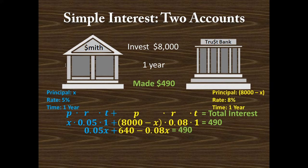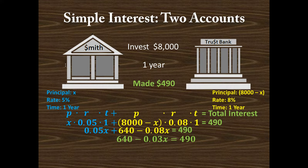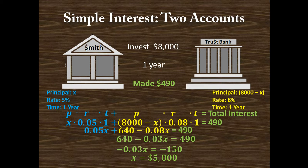Keeping our total interest of $490, we combine like terms. We have 0.05X minus 0.08X, which gives negative 0.03X. So the equation becomes: 640 − 0.03X = 490. To isolate the variable, we subtract 640 from both sides: 490 − 640 = −150. Then we divide both sides by −0.03, giving us X = $5,000.